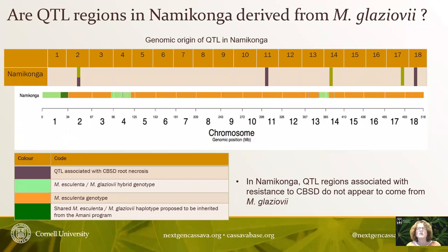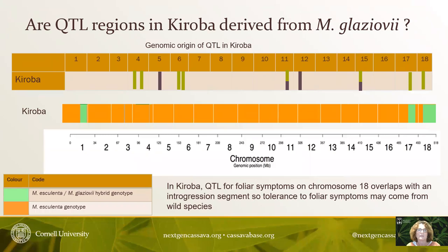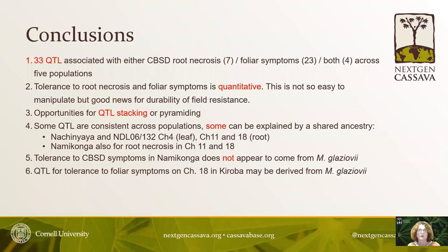One key question was whether QTL regions in Namikonga are derived from Manihot glaziovii via the Amani breeding program. Overlaying the Namikonga QTL map with introgression regions of Manihot glaziovii from resequencing data showed no overlap, so we conclude that QTL in Namikonga do not appear to come from Manihot glaziovii. Doing the same analysis with Kiroba, however, revealed some overlap, suggesting that foliar tolerance in Kiroba may indeed be derived from the wild species Manihot glaziovii.